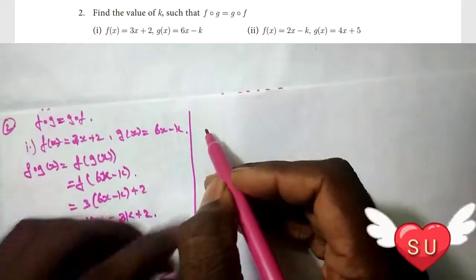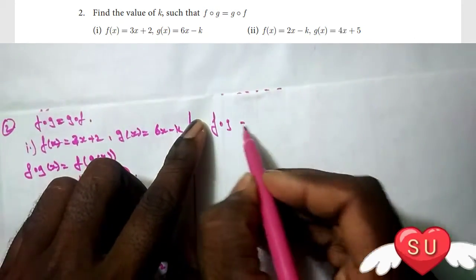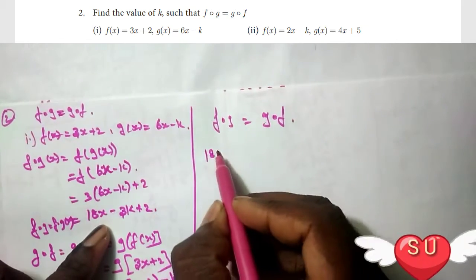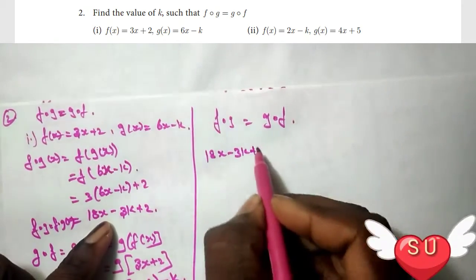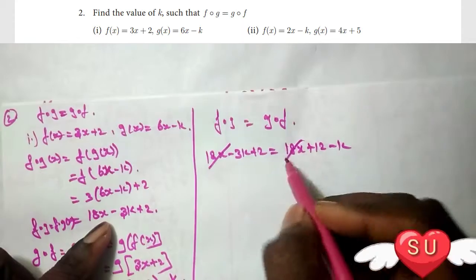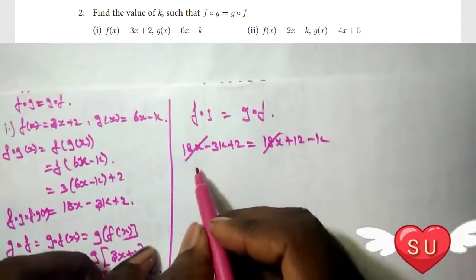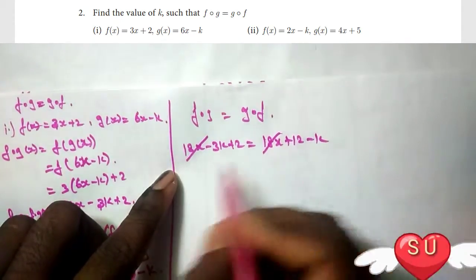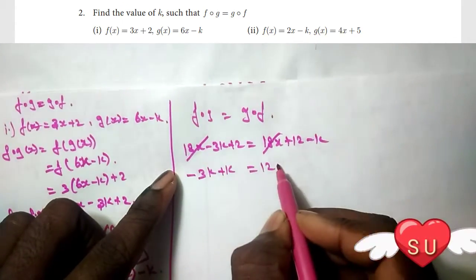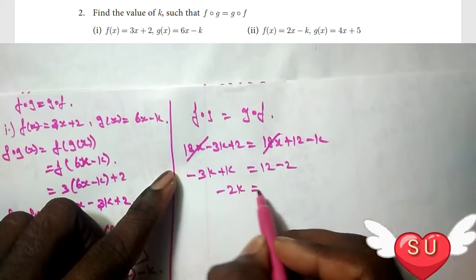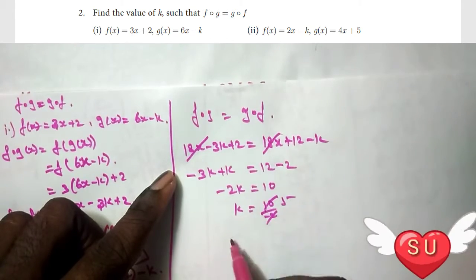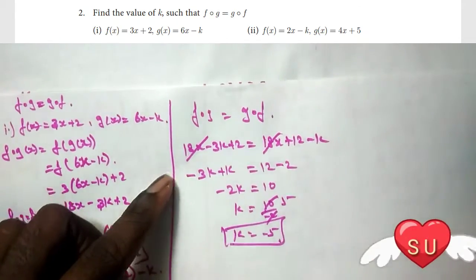Now, we are going to find out. The first condition is g∘f equals f∘g. So, 18x minus 3k plus 2 equals 18x plus 12 minus k. The 18x terms cancel. So, minus 3k plus k equals 12 minus 2, giving minus 2k equals 10. Therefore, k equals 10 divided by minus 2, so k equals minus 5. This is the answer.